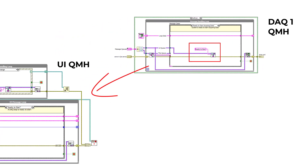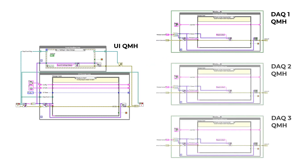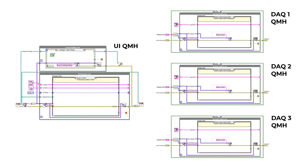But this method quickly runs into problems. For example, say we add another two separate data acquisition queued message handlers to our application, and they too want to send a message to the UI message handling loop's ready to start case. Then each queued message handler needs to contain the same ready to start string constant. In fact, there may be several other places in our code that also contain the same ready to start string constant.